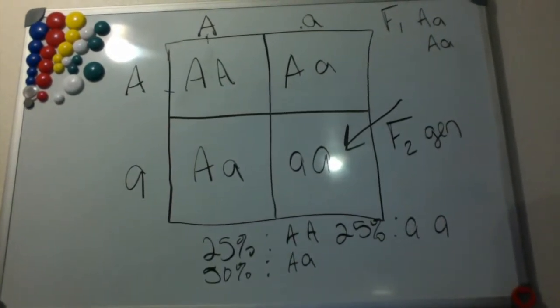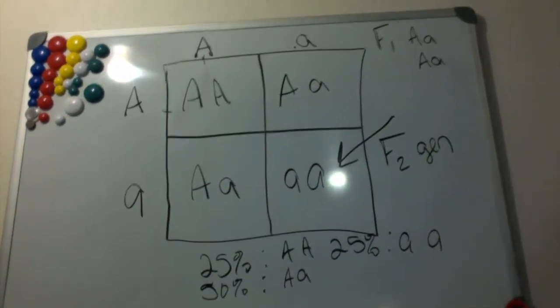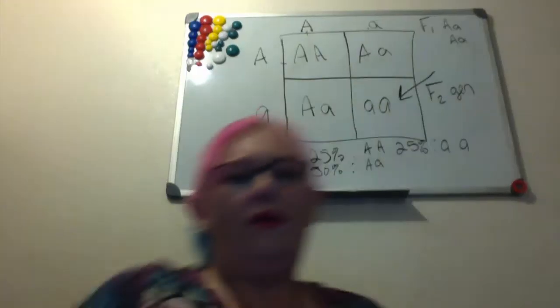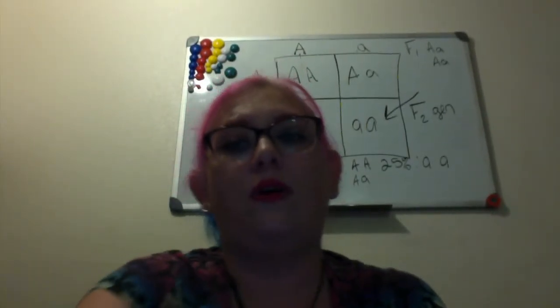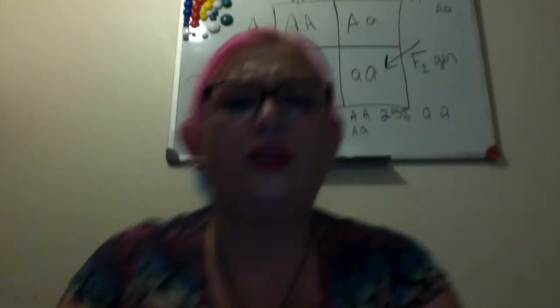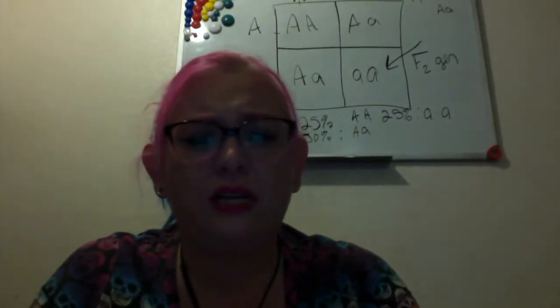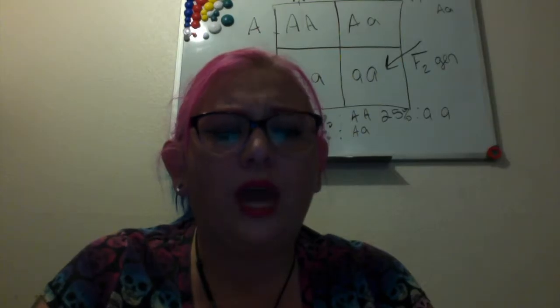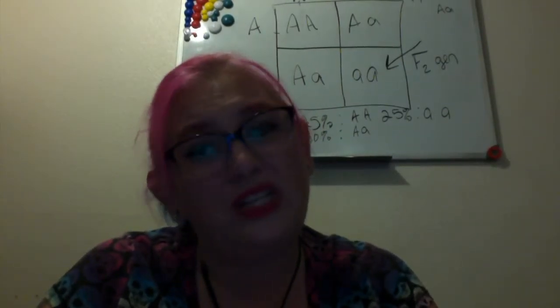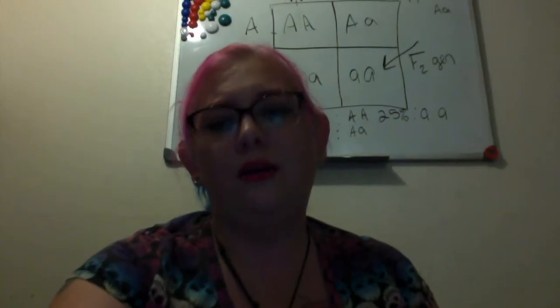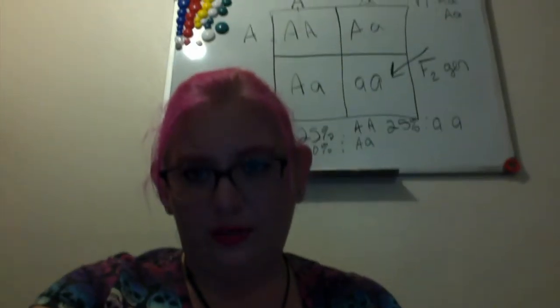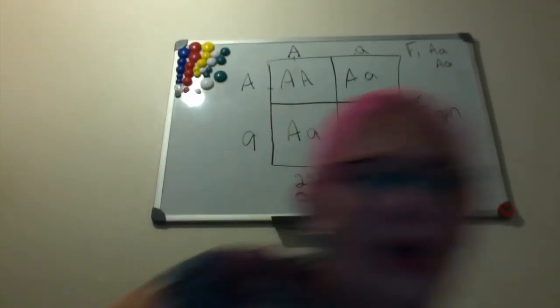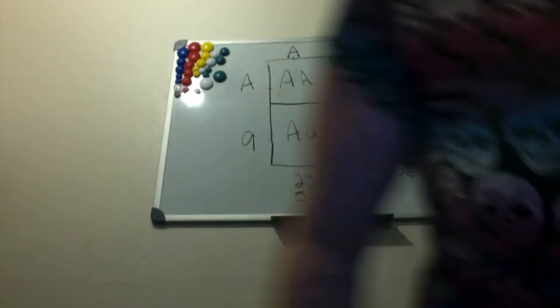You can kind of see what the Punnett squares are used for. Now typically, Punnett squares you're not going to use for any more than one or two traits or alleles. You can do it for more but it's usually not recommended. You want to see one with two traits? We can do that real quick, so let's go ahead and do that now.